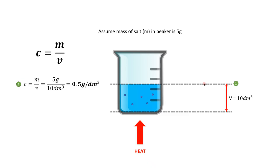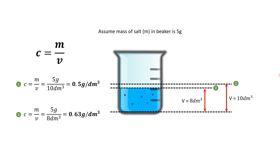If we now apply some heat to vaporise some of the water in the beaker, the total volume would therefore be less because some of the water will have evaporated. Assuming that after evaporation the total volume is now 8 dm³, and since the mass of salt remains the same, the concentration is now 5 divided by 8, which gives us 0.63 grams per dm³ — clearly greater than 0.5 grams per dm³. This clearly shows that after evaporating, the concentration does indeed increase.